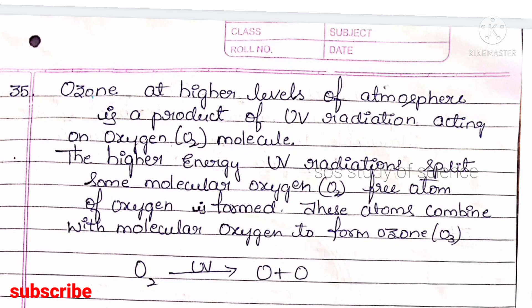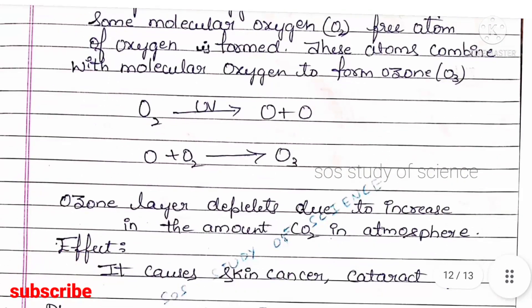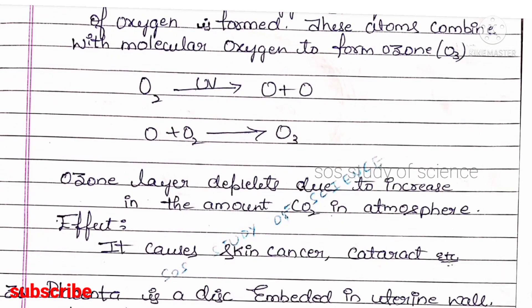Question 35: how is the ozone layer formed, what causes its depletion, and what is the effect? The ozone layer is formed at higher levels of the atmosphere as a product of UV radiation acting on molecular oxygen. UV radiation splits O₂ into free oxygen atoms, which then combine with molecular oxygen to form O₃ (ozone). The ozone layer gets depleted due to an increase in the amount of carbon dioxide in the atmosphere.